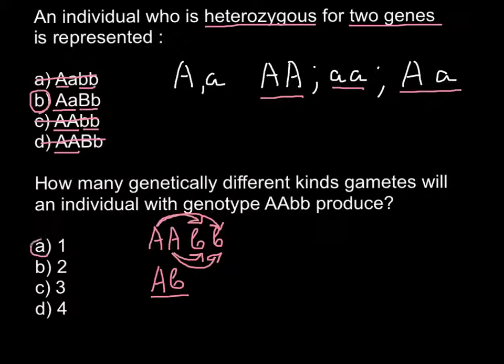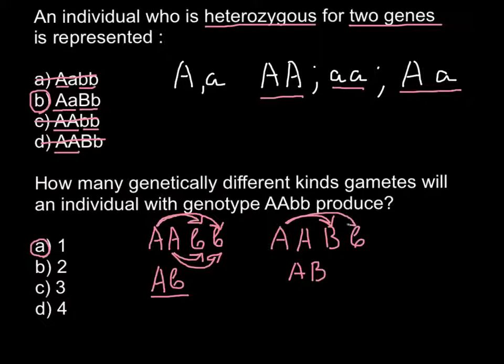So our answer would be A — only one type of gamete. I also want to show you different variants that are possible if we have different genotypes. For example, capital A, capital A, capital B, small b — in this case we would have two variants: capital A, capital B and capital A, small b. So when we have homozygous condition for one gene and heterozygous condition for the second gene, we would have two possible variants for the gametes.